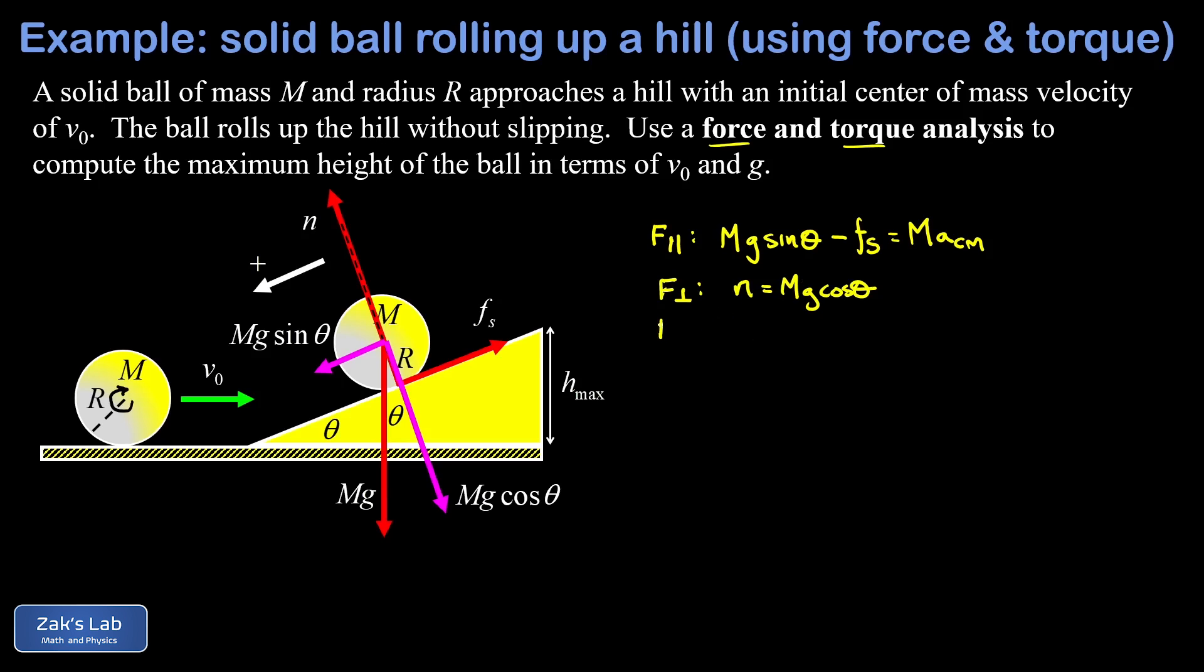Now we do a torque analysis and there's only one of these external forces on the ball that's causing a torque and that's the static friction force. Again that's an unknown fs, so you multiply that force by the length of the lever arm. That's the distance in this case between where that force is exerted and the center of mass of the ball, and that distance is just the ball's radius, so I have fs times R for that torque.